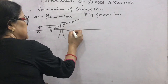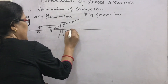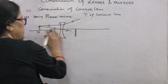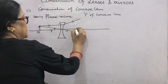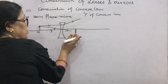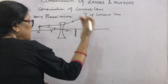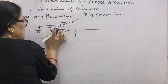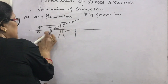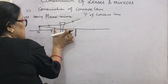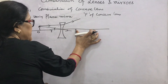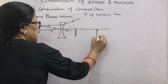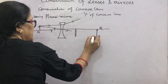Place a plane mirror after the concave lens with its polished surface facing the lens. Shift another pin (image pin PQ) such that its distance from the plane mirror equals the distance of the virtual image formed by the concave lens from the mirror. For a plane mirror, the image distance equals the object distance, so you adjust the pin until the image of PQ coincides with the virtual image formed by the concave lens.